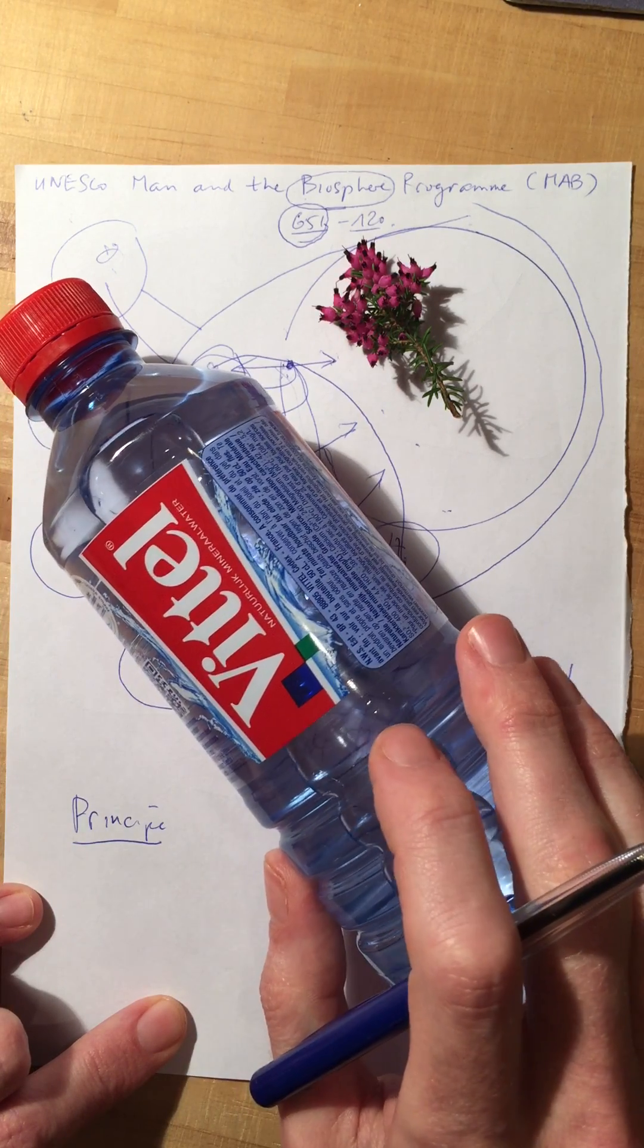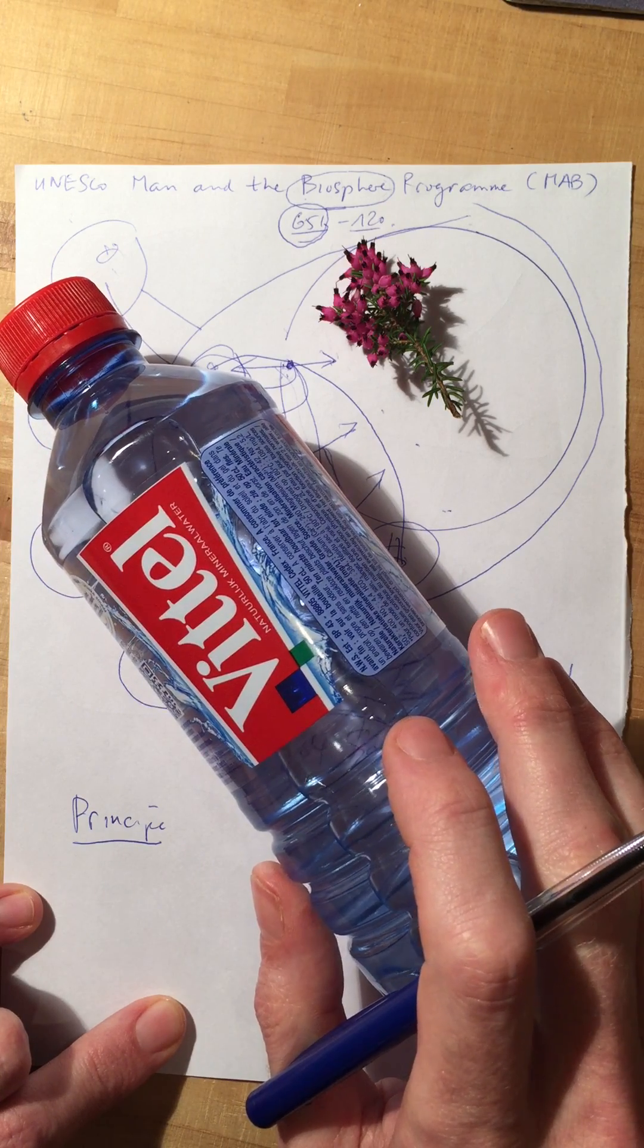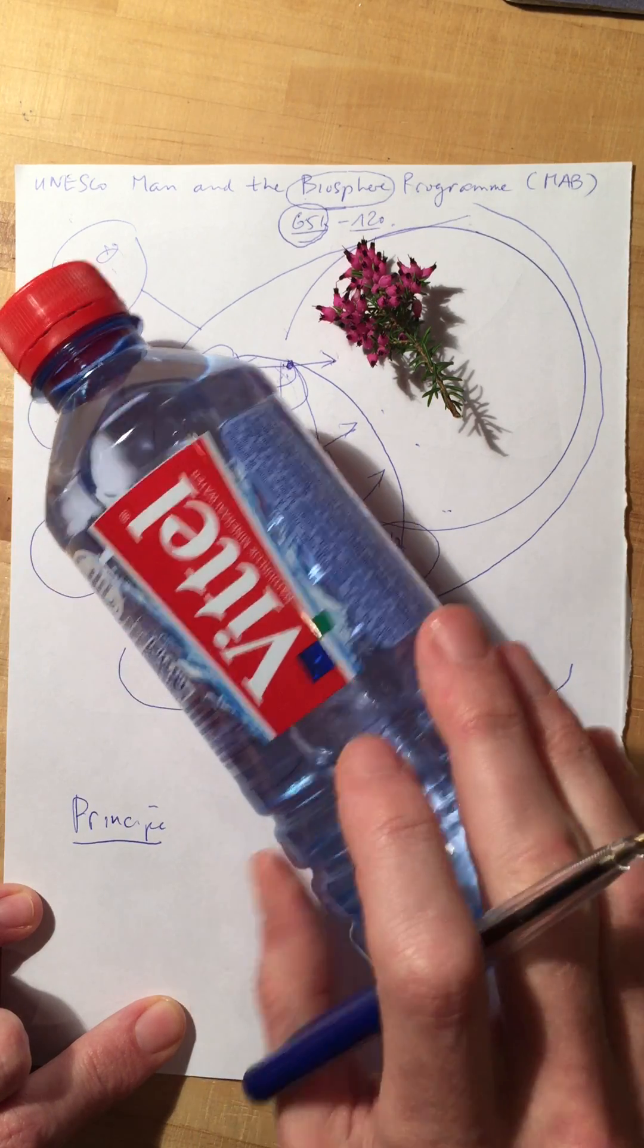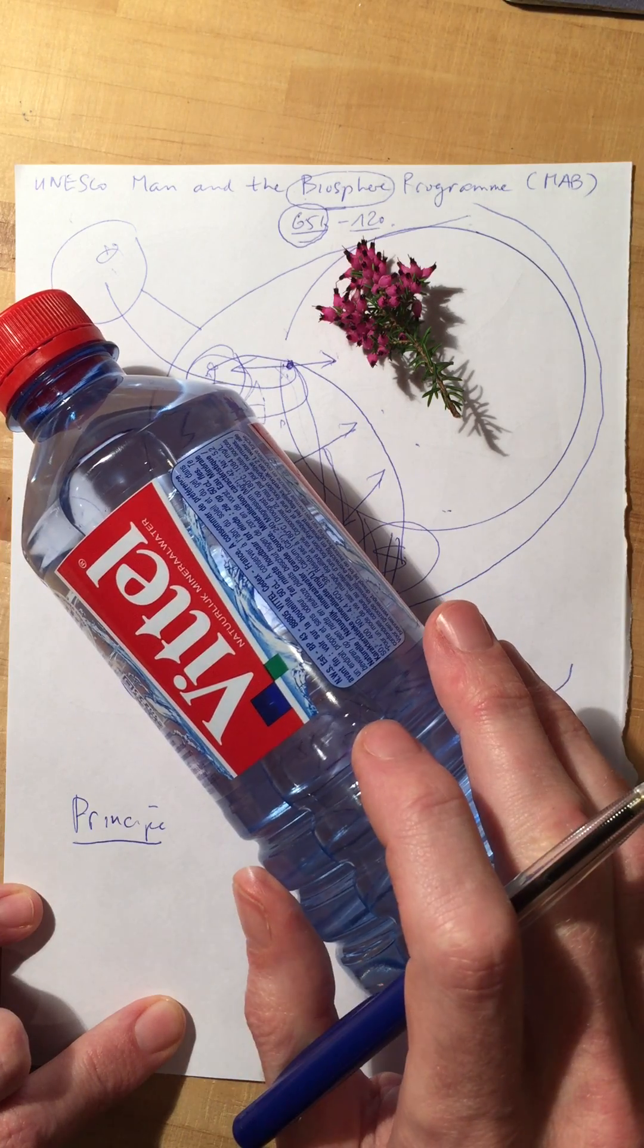For every 50 plastic bottles that were collected, the person received a metal bottle that could be reused. And it worked. Hotels stopped selling plastic bottles to their clients, and instead started selling these metal bottles that could be reused.